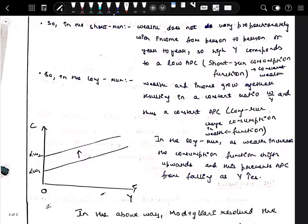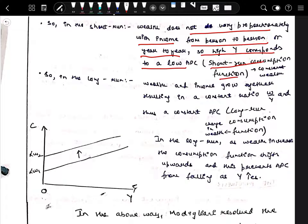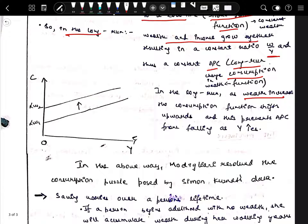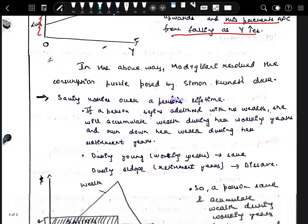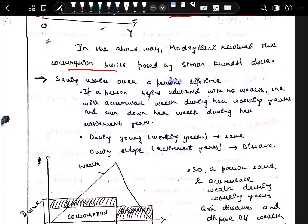In the short run, wealth does not vary proportionately with income from person to person or year to year, so high income corresponds to a low APC. In the long run, wealth and income grow together, resulting in a constant W/Y ratio and hence a constant APC. As wealth increases in the long run, the consumption function shifts upward, which prevents APC from falling as income increases. This is the wealth component that explains why short-term APC declines with rising income while long-term APC stays constant.